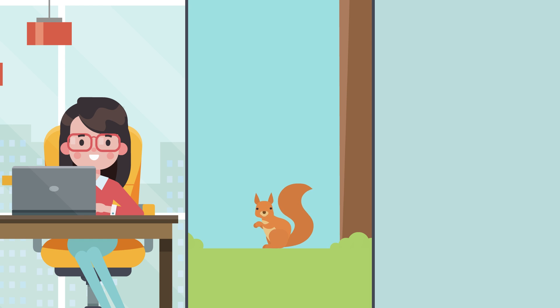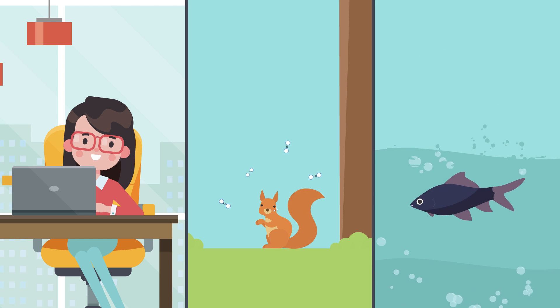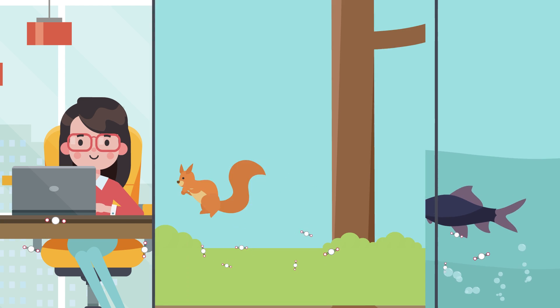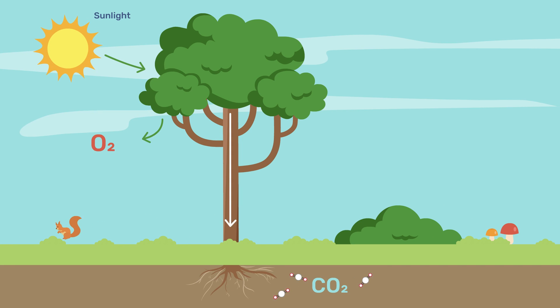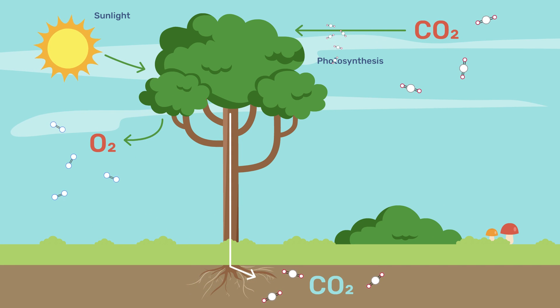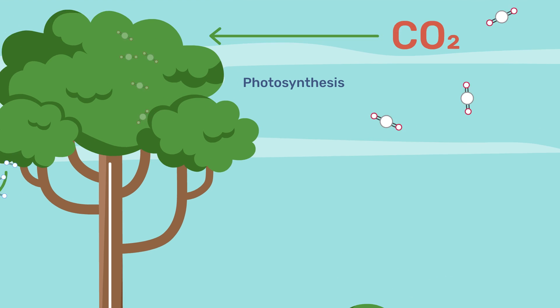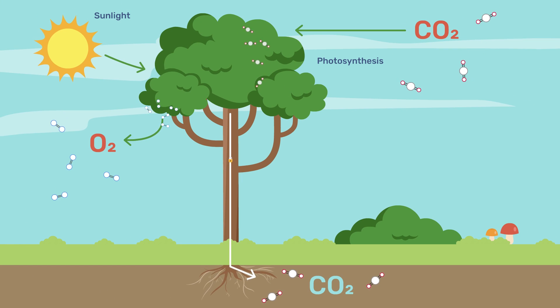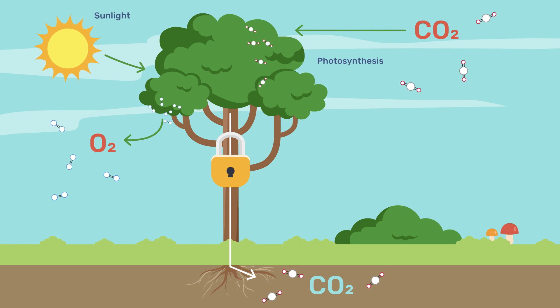Every breath you take, you inhale oxygen and exhale carbon dioxide. Plants, on the other hand, take in carbon dioxide to grow in the process known as photosynthesis. They then store that carbon in their roots and trunk and give back the oxygen into the air we breathe.